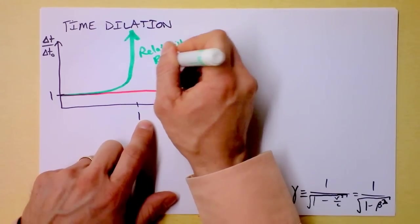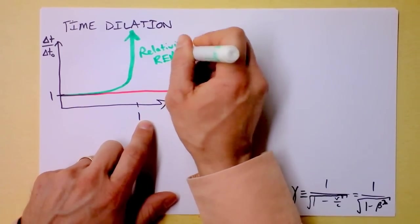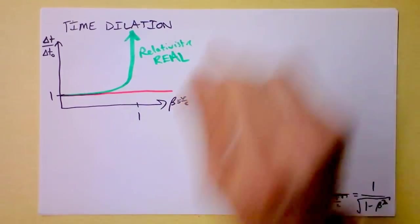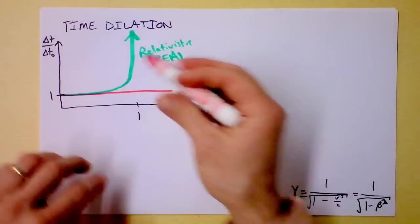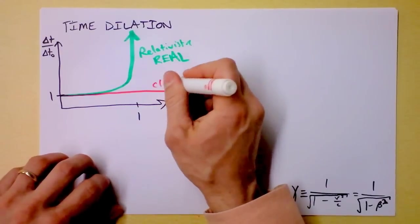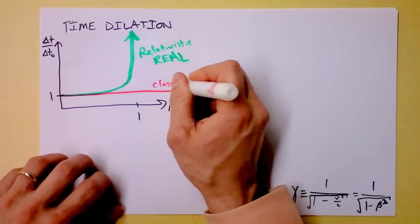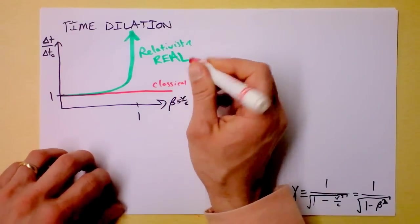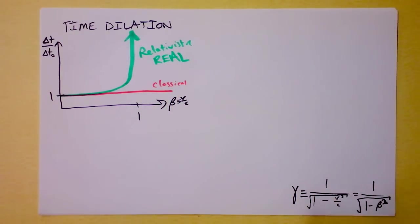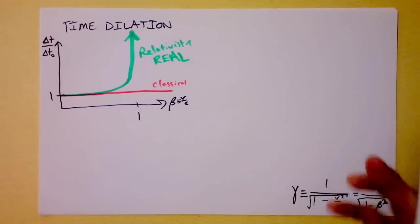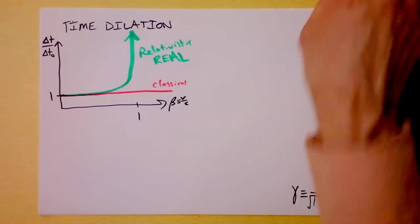In a word, the relativistic result is real — that's what actually happens. The red classical line, where time doesn't depend on how fast you're moving, seems like an intuitive idea but turns out to be wrong.